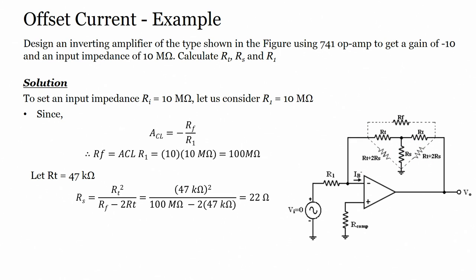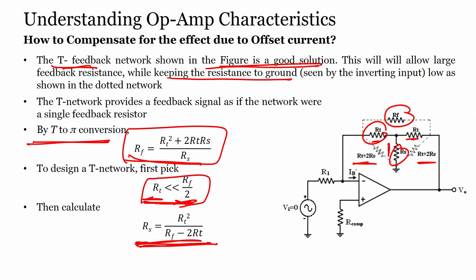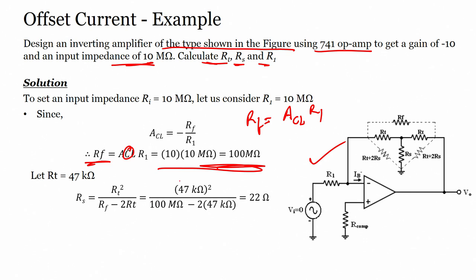Let us take an example: design an inverting amplifier using a 741 for a gain of -10 and input impedance of 10 megaohms; also calculate RT, RS, and R1. Since gain = -RF/R1, we get RF = 100 megaohms. Let RT = 47 kilohms (less than RF/2 = 50 MΩ), giving RS = 22 ohms.